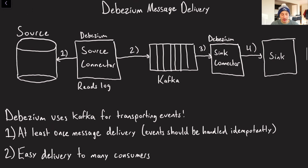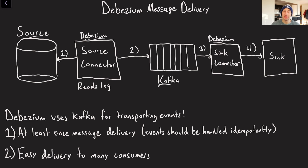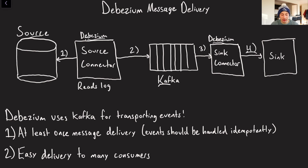What does Debezium message delivery look like? Pretty simple. You've got your source database — imagine that's MySQL or something. Debezium operates in two places: you've got your source connector, which is continuously reading the log of the source database and then publishing that out to Kafka. Debezium is also responsible for something known as the sync connector. Both the source connector and the sync connector are connected to Kafka using Kafka Connect. The sync connector takes that data in and sends it to any of the sync nodes configured with Debezium — like Elasticsearch or Flink.